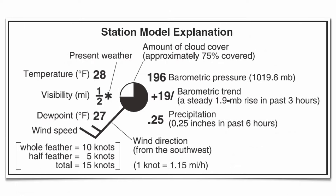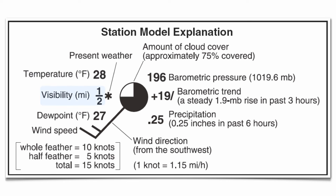The great thing about your station model is that all the variables are always going to be in the same spot from station model to station model, with the exception of wind direction. The first variable we're going to talk about is air temperature. That's always going to be given to you in degrees Fahrenheit, in the upper left-hand portion of your station model. Below that is going to be your visibility, given to you in miles — sometimes a fraction, sometimes a whole number. It's basically how far you can see.